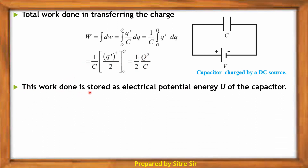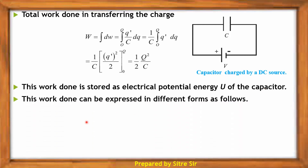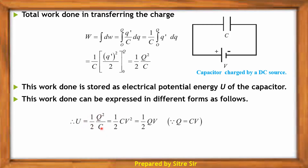This work done is stored as electrical potential energy U of the capacitor. This work done can be expressed in different forms. U equals one-half Q squared by C.